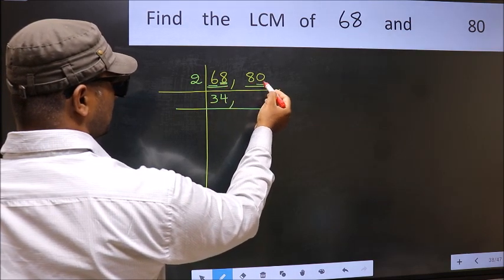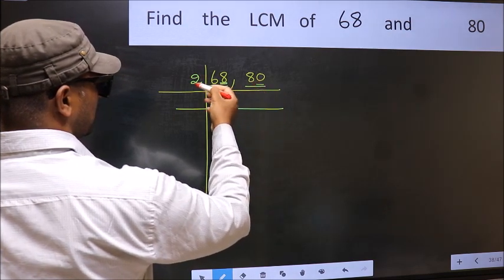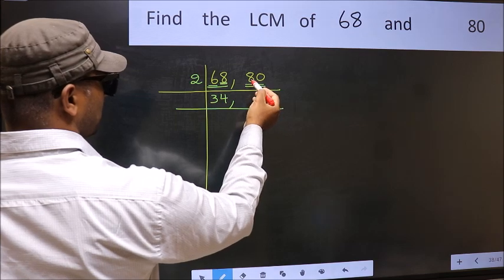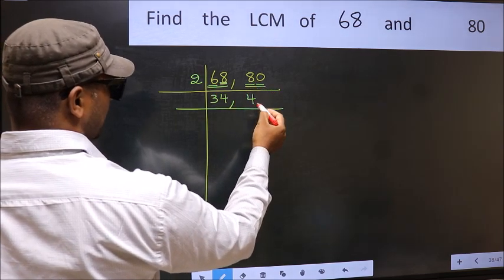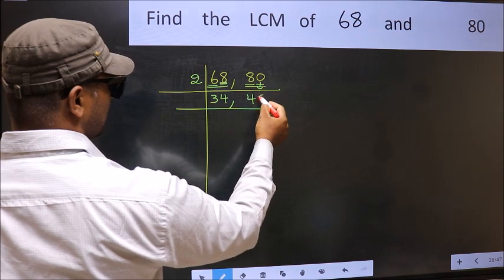Now the other number 80, last digit 0, so this is divisible by 2. First number 8, when do we get 8 in 2 table? 2, 4, 8. Now this 0 as it is down.